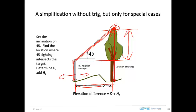And so you can get the elevation difference by taking—it's just d plus h1, the height of the instrument above the ground surface. It's basically the height of your eye.